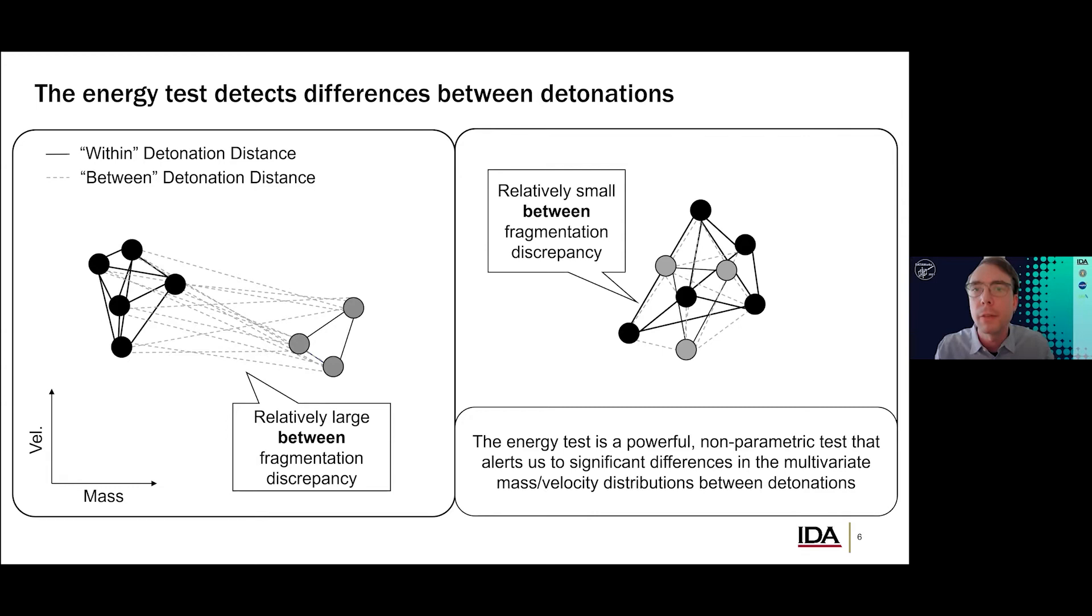This is an introduction to energy tests. If you're familiar with M&S validation, then you've encountered the Kolmogorov-Smirnov test to determine if simulation data is similar to live data. The energy test is, in some sense, an extension of the KS test to a multi-dimensional data problem. The energy test is inspired by physics, and it likens data to particles in space and measures a data-driven type of potential energy between them. But we are not strictly speaking about a physical notion of energy when we talk about the energy test. Now, for explanation purposes, this is an example of two detonations with five black and three gray fragments. And the characteristics that are plotted are the mass and velocity of these fragments, but we are not limited to talking about the mass and velocity by any means.